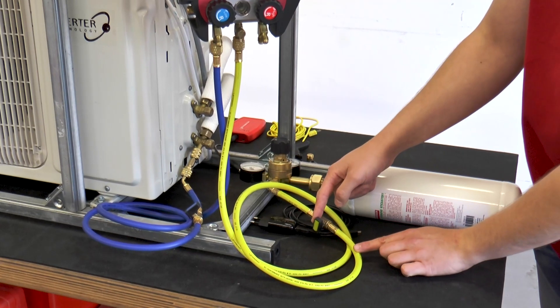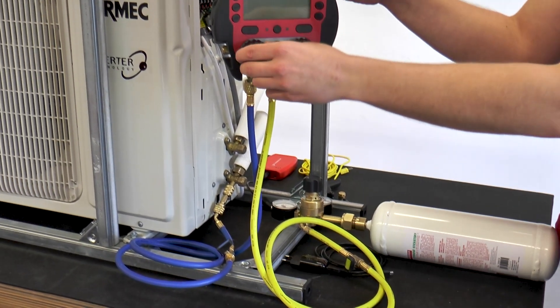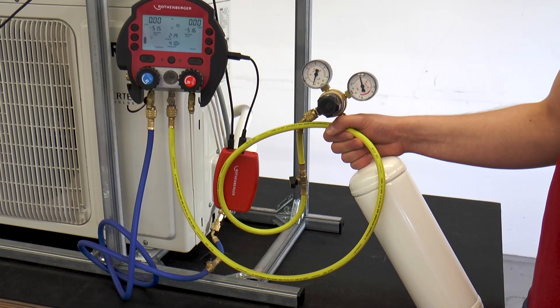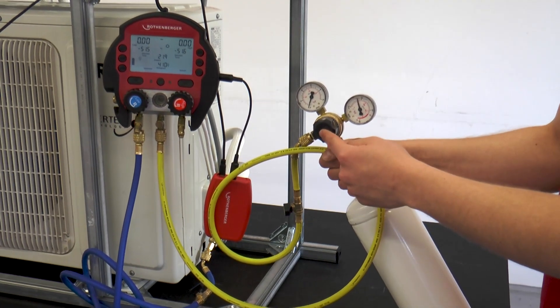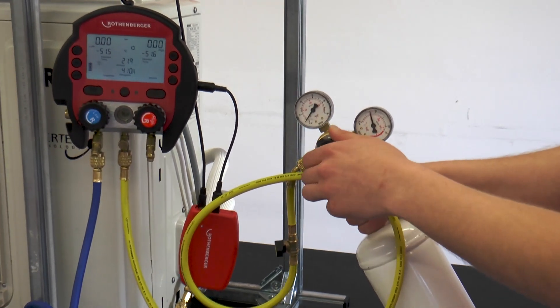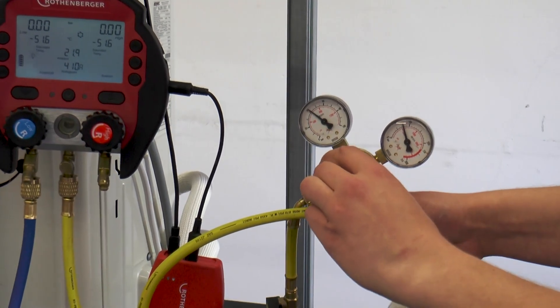All shutoff valves are closed. Now the required working pressure can be set and taken from our working pressure gauge, in this case 43 bar.